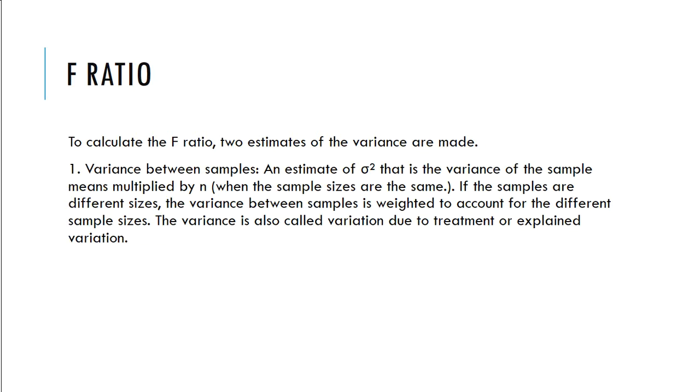So what it is, it's your variance of all those samples, and you multiply it by N when the sample sizes are the same. If the sample sizes are different, the variance between the samples is weighted to account for the different sample sizes. The variance is also called variation due to the treatment and or explained variation.